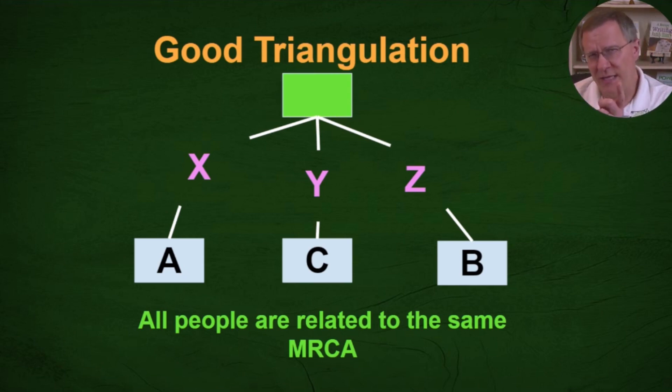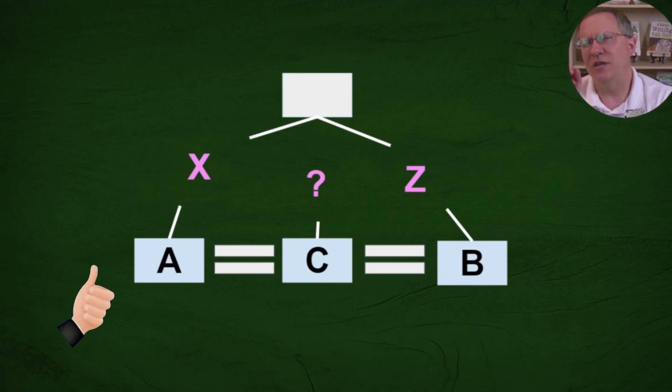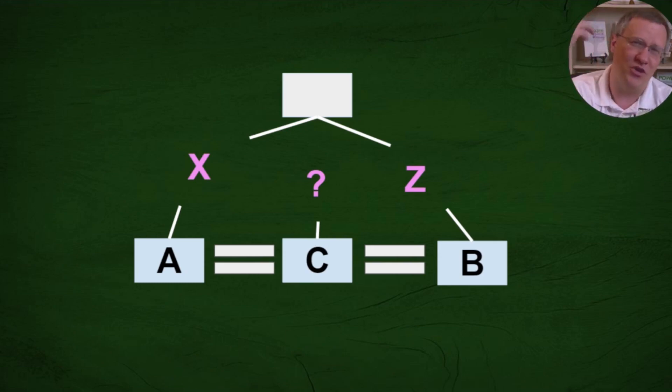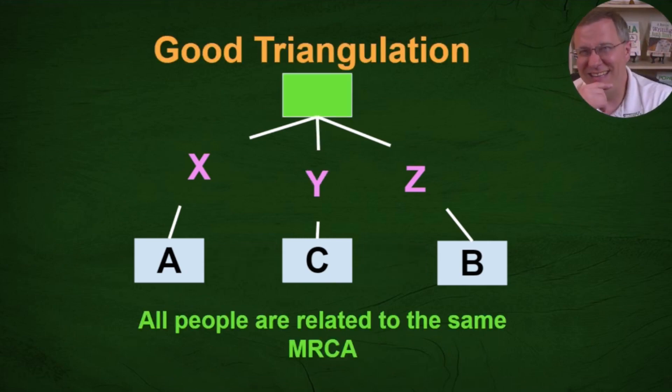All right so let's start to work backwards then. What if we actually know how two of these are related to this most recent common ancestor and they triangulate with this third person. First off does it automatically mean that this third person is descended from that most recent common ancestor of the other two? Not necessarily because he could be up a generation or two. But this is still an example of good triangulation because while X, Y, and Z as far as the number of generations in between them may change all three of these people again are related to the most recent common ancestor.